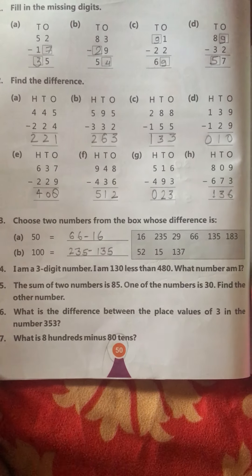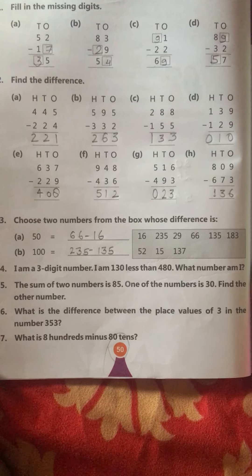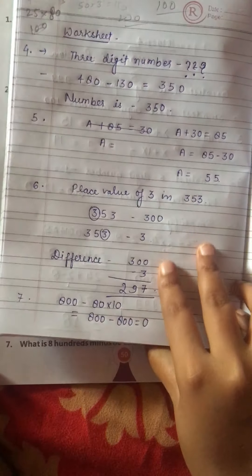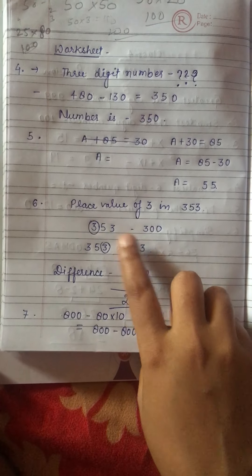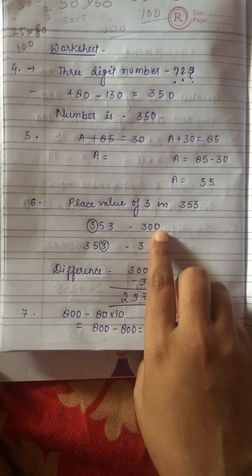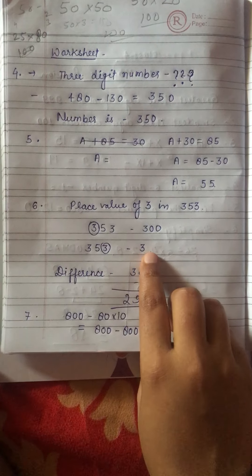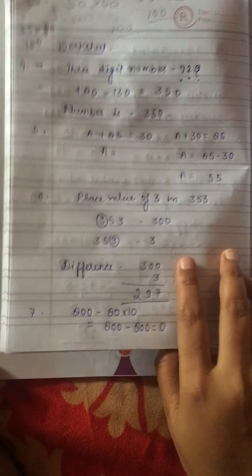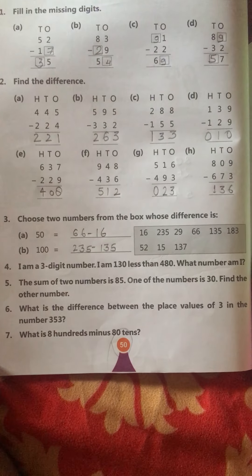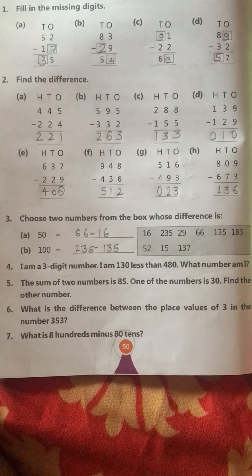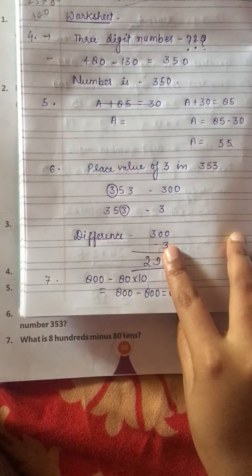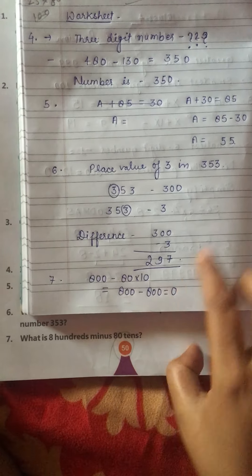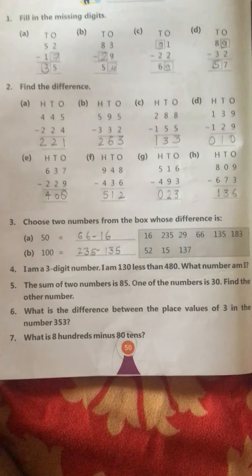Question number six: we need to find the difference between the place values of 3 in a number. In one place the value of 3 is 300, and in another place it is 3, so the difference is 297. Next: 800 minus 80 tens equals 0.